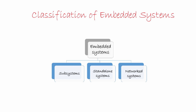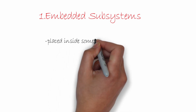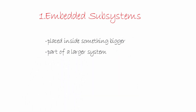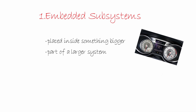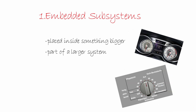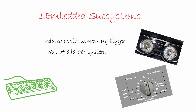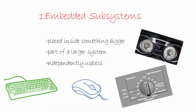Let's first look at the class of embedded systems called embedded subsystems. The term embedded means placed inside something bigger. This flavor of embedded system is usually a part of a larger system — in fact, this is where the term embedded system was originally coined. A popular example is a digital dashboard in your car, where the car is the larger system and the display is embedded inside it. Other examples include the timing and display circuits of your microwave ovens, washing machines, and dishwashers. Even parts of a computer like a keyboard and a mouse are basically embedded systems. Independently, these embedded systems are useless, but they aid a larger system to do its task.